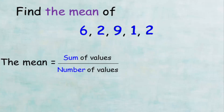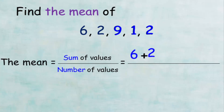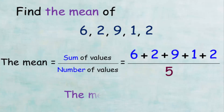We write the law of arithmetic mean: sum of values divided by the number of values. The sum is 6 + 2 + 9 + 1 + 2, then we divide by 5. So the arithmetic mean is 20 over 5, which equals 4. Therefore, the mean is 4.